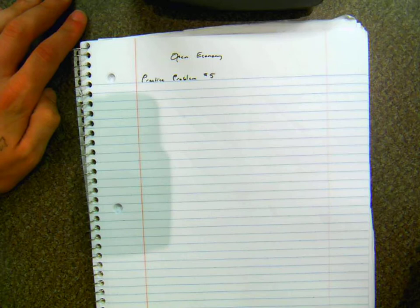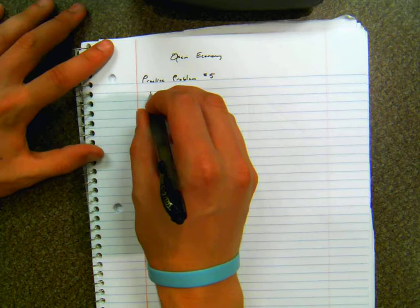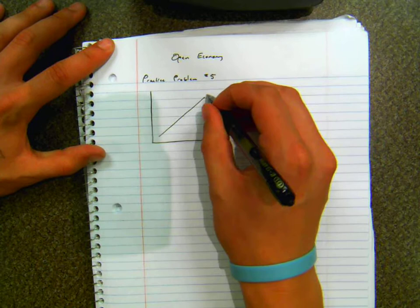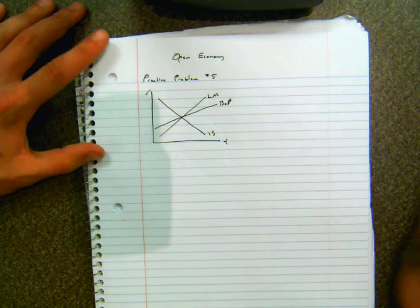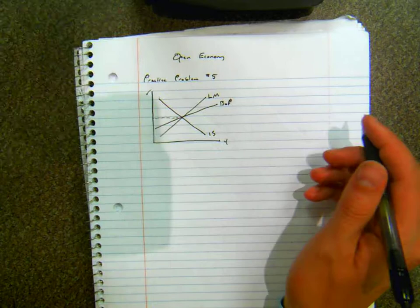So first we want to draw this economy to the standards that it gave us which says imperfect capital mobility and flexible exchange rate. So I'm just going to draw this out. Your IS-LM BOP model. All right so R and Y. So here we are at equilibrium.